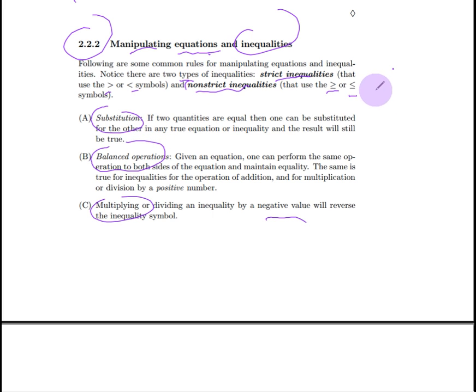If I was going to do part A for strict inequality, well, let's do greater than. This says, if two quantities are equal, then one can be substituted for the other in any true equation or inequality, and the result will still be true. So, for instance, I have three plus five equals four plus four. And I also have four plus four is greater than seven. Alright. Now, what substitution says is that I can substitute this three plus five in for the four plus four, and I still have a correct result. So, three plus five is greater than seven. Okay. So, this would be an acceptable inequality example for substitution.